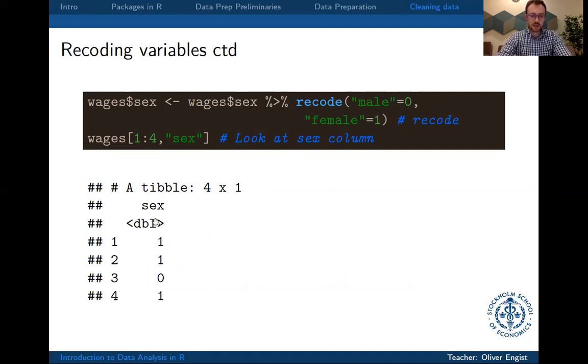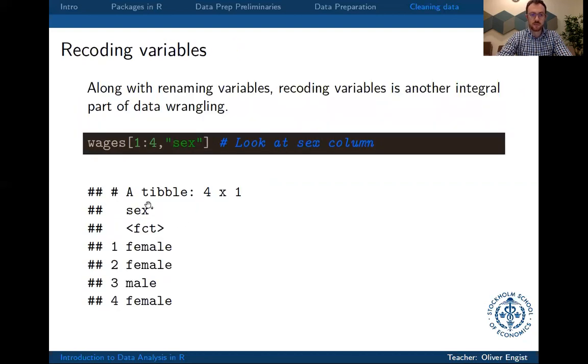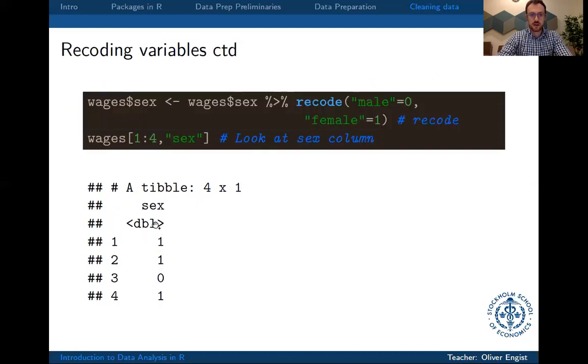And now if you take a look at it, you can see that before it used to be a factor, and now we have a numeric value, since it's only 0 or 1, this doesn't make our analysis any different, so it might be useful to recode it that way.